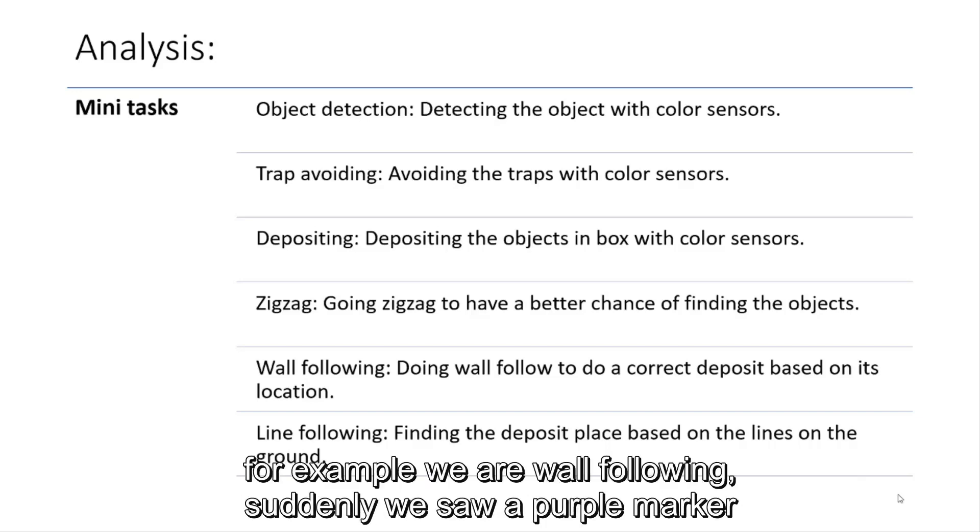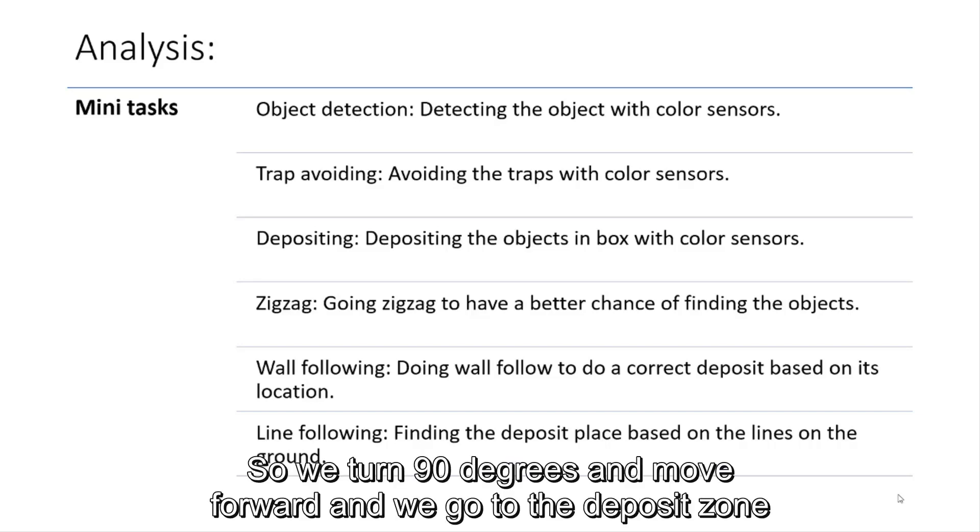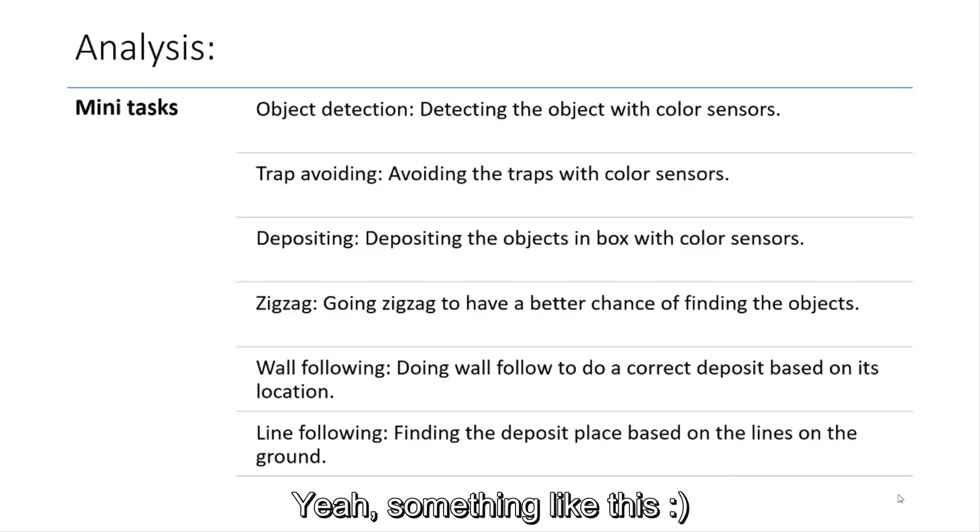For example, we are wall following and suddenly we saw a purple marker. So we turn 90 degrees and move forward and we go into deposit zone. Yes, something like this.